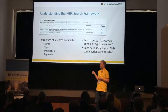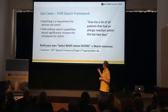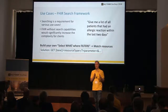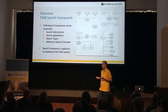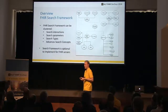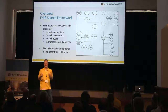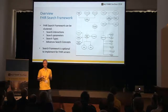One important thing is the FHIR Search API only allows an AND combination — a logical AND. You can't say please give me all patients that have this name OR this address. The FHIR Search API is quite complex, so I tried to come up with an overview of all the functionality within the FHIR search framework, which you can cluster in four ways: search interactions, search parameters and rules about them, advanced search concepts, and types.